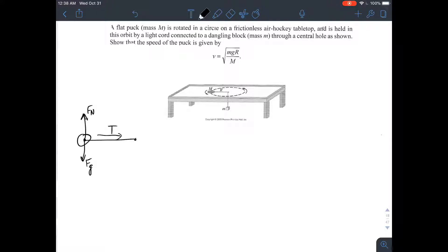The other system is the dangling block, and that's going to have a small lowercase m for its mass. And over here, the puck has an uppercase M for its mass. There's a tension pulling up on the dangling block. There's the force of gravity pulling down on the dangling block.